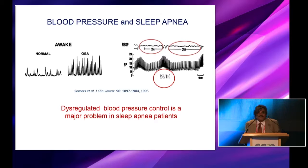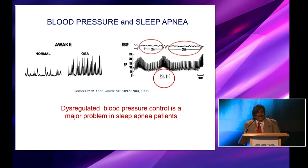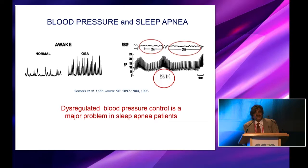High blood pressure, if chronic, can also lead to heart failure. Most of these people are resistant to conventional hypertension therapies — in other words, they are resistant to standard drugs. As a consequence, controlling blood pressure is a major problem in these patients.